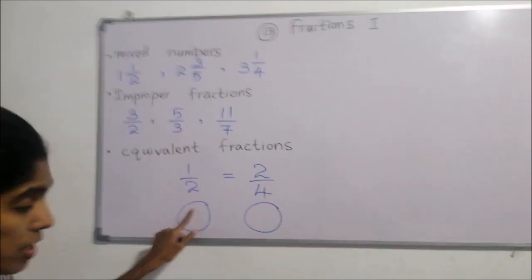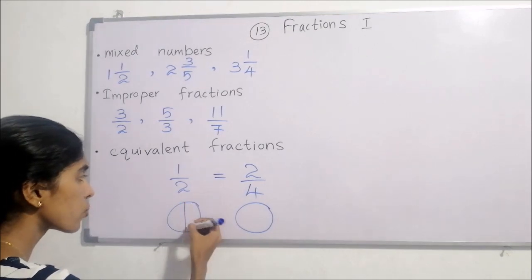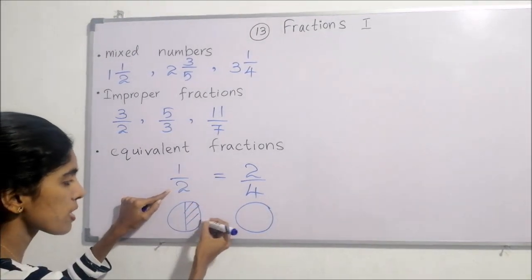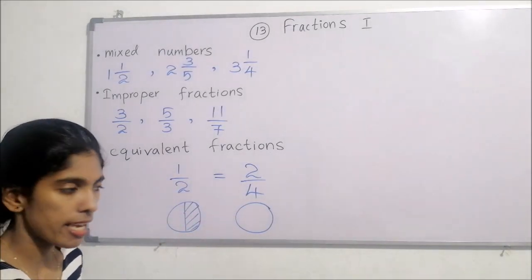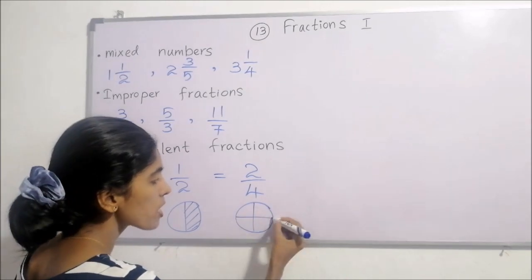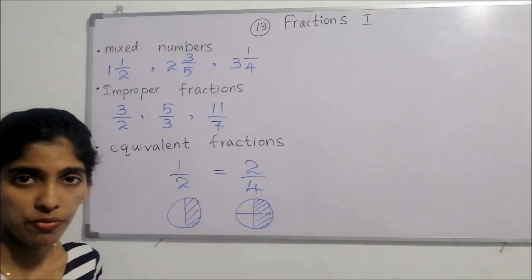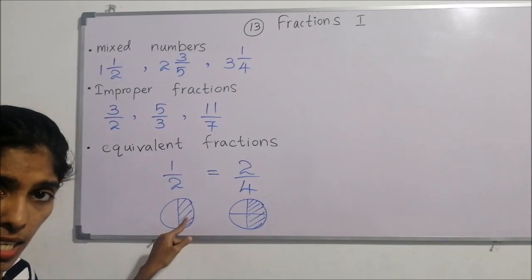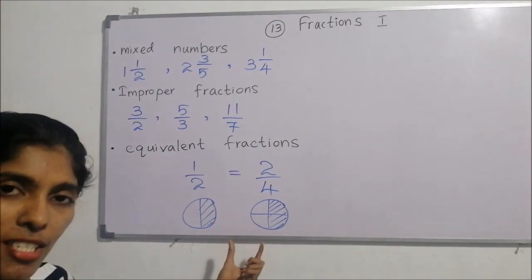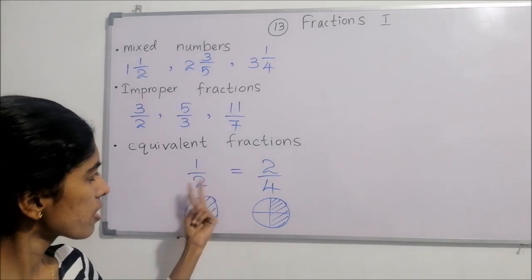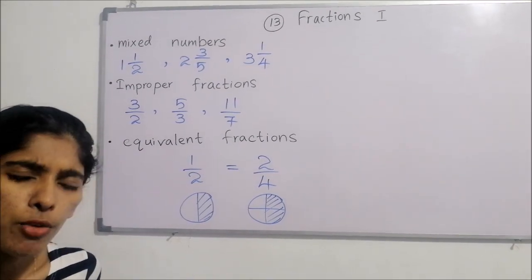I can represent these two fractions with the help of a circle. Imagine this is a cake — I cut it into two equal pieces and eat one piece, that means half. The next cake is cut into four equal pieces and two pieces are eaten. Out of two, one piece is eaten; out of four, two pieces are eaten — the same fraction is represented.